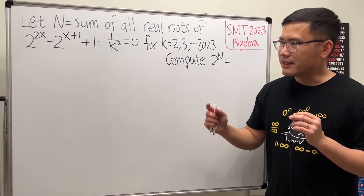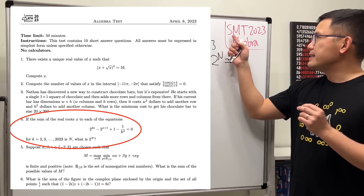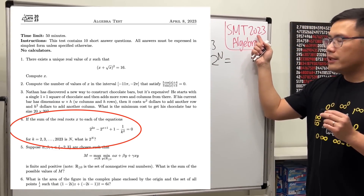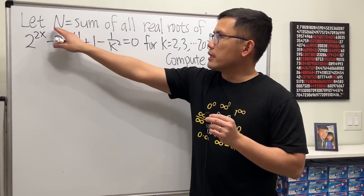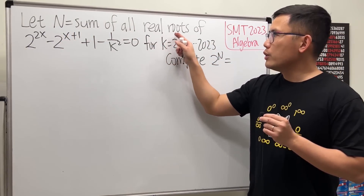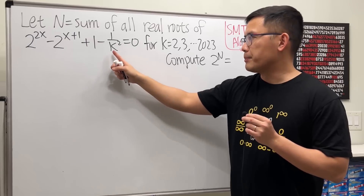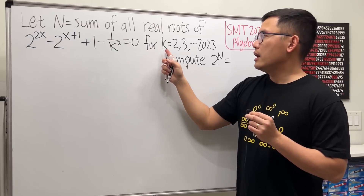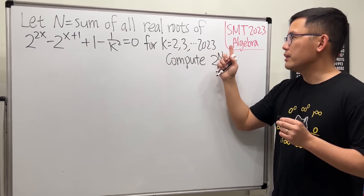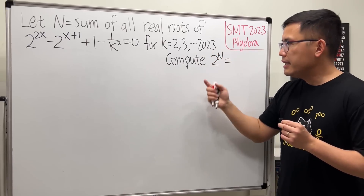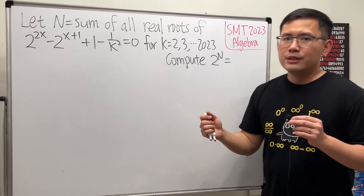Let's do some math for fun. Today I have this beautiful exponential equation problem from the Stanford Math Tournament in 2023, the algebra part of it. Here is the question: capital N is the sum of all the real solutions to this equation. Notice that there's a parameter k, and k goes from 2, 3, 4, 5, up to 2023. At the end we want to compute 2 to the Nth power.